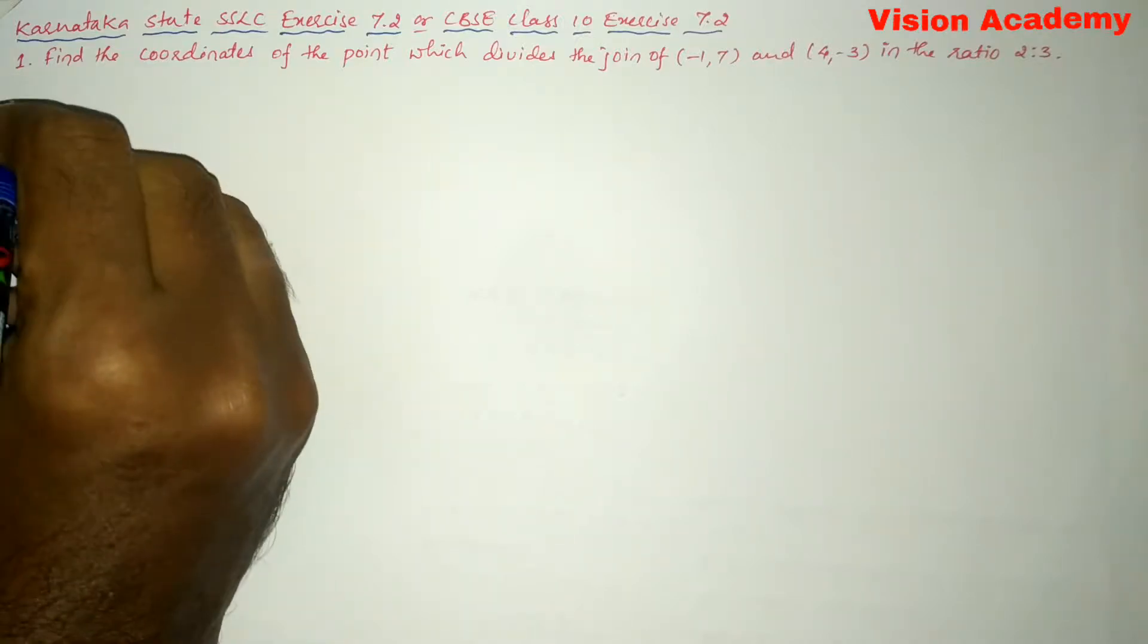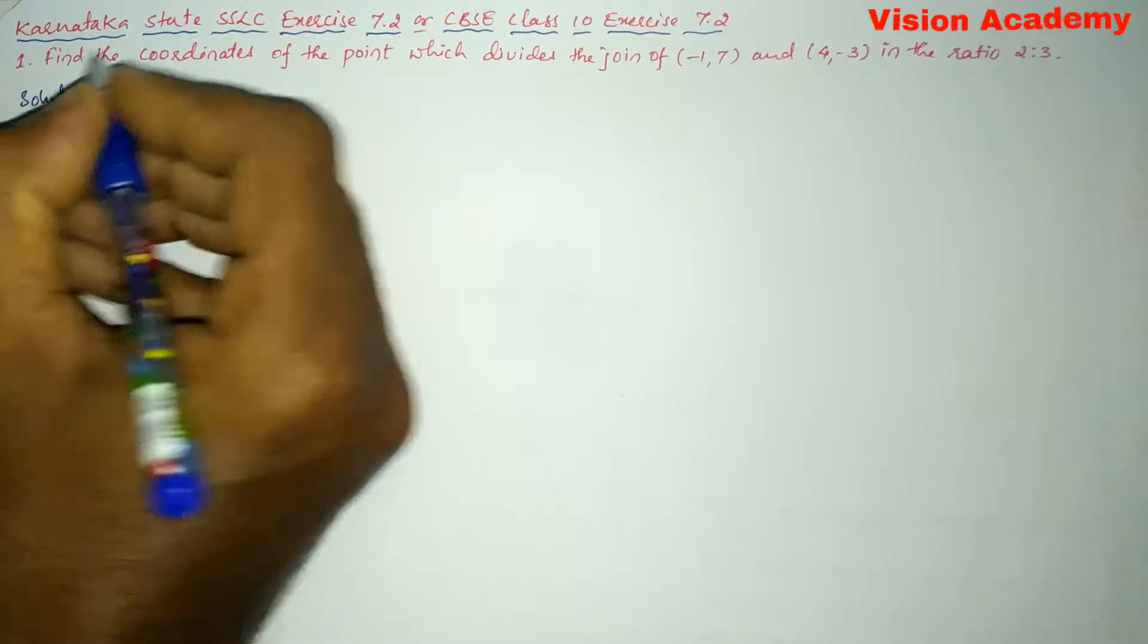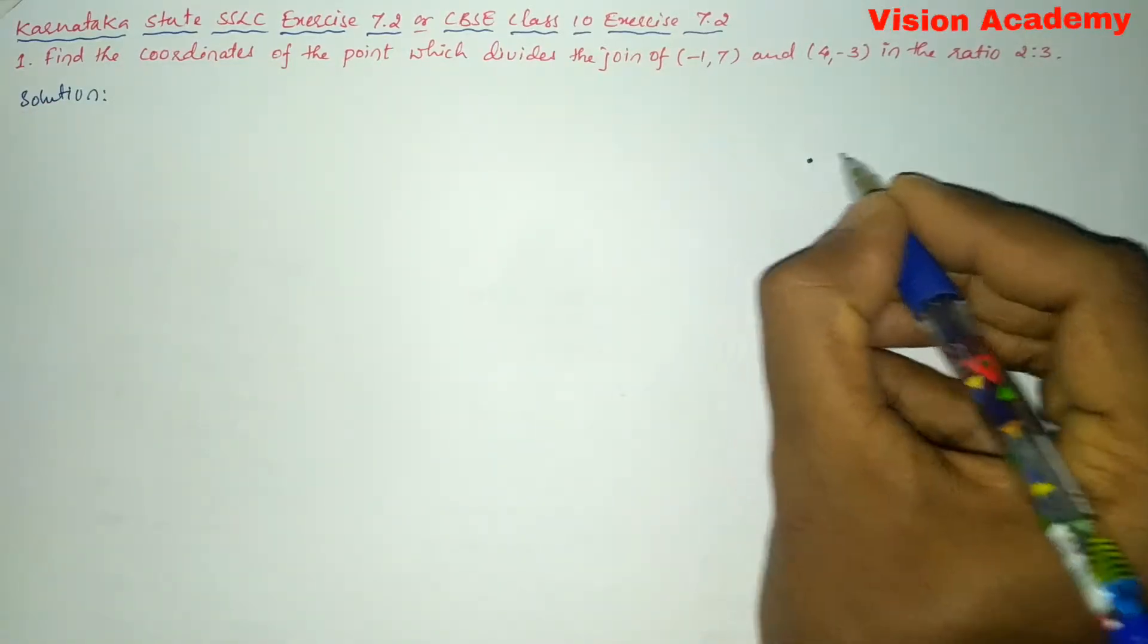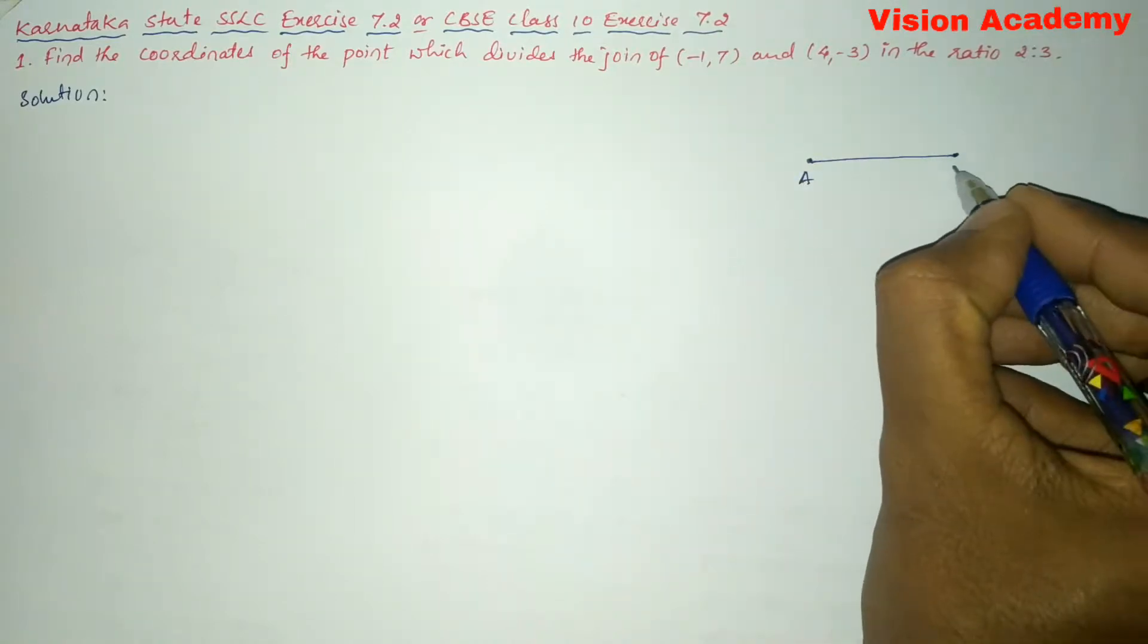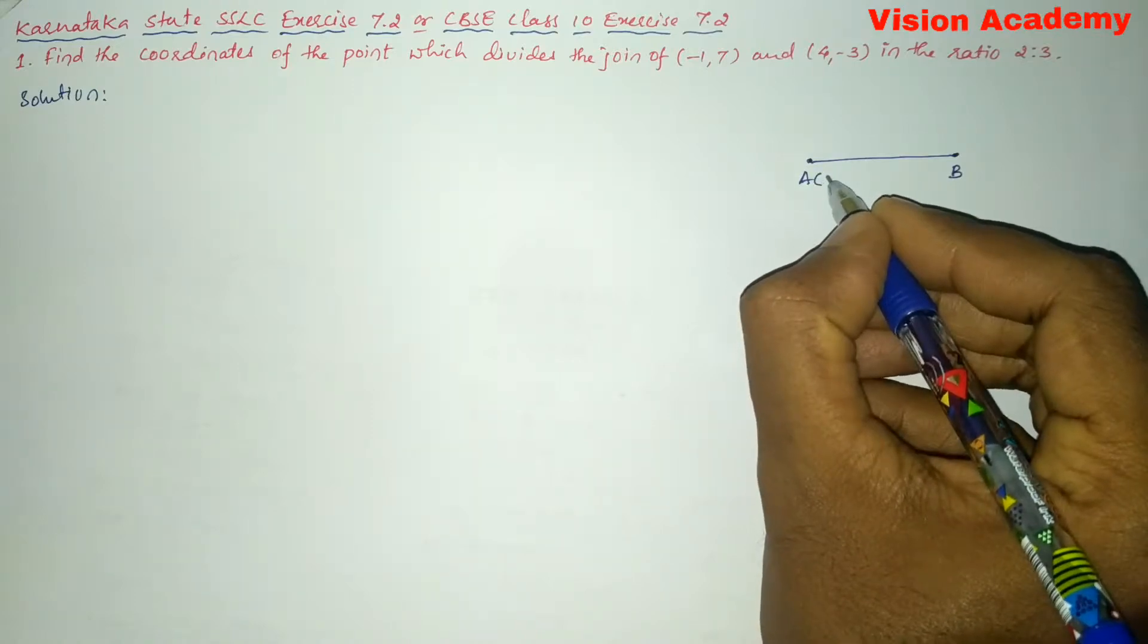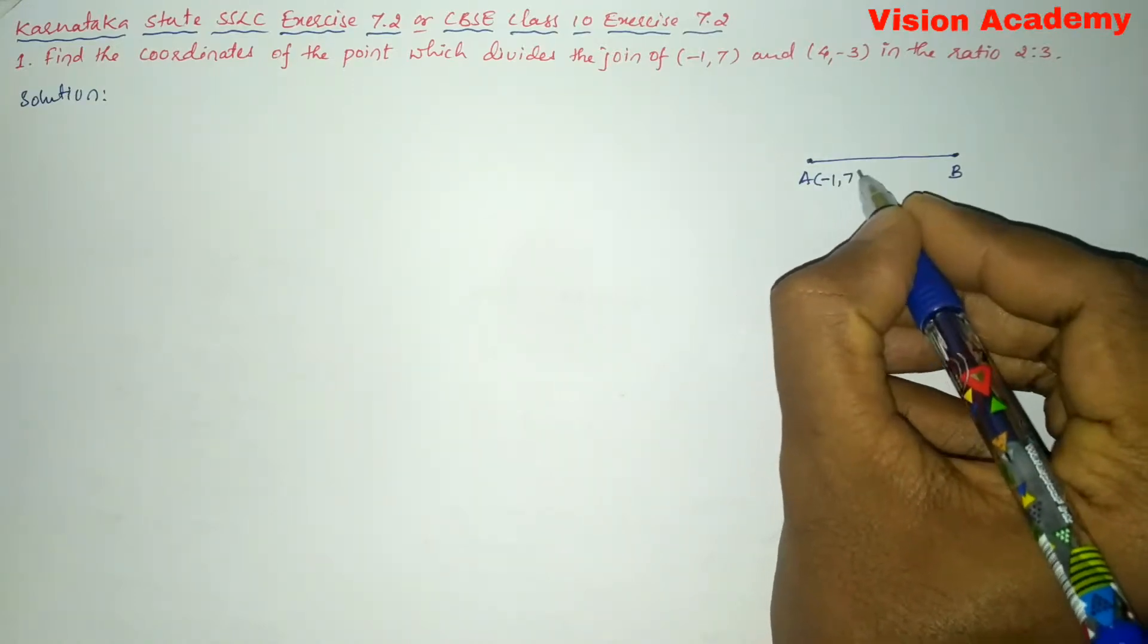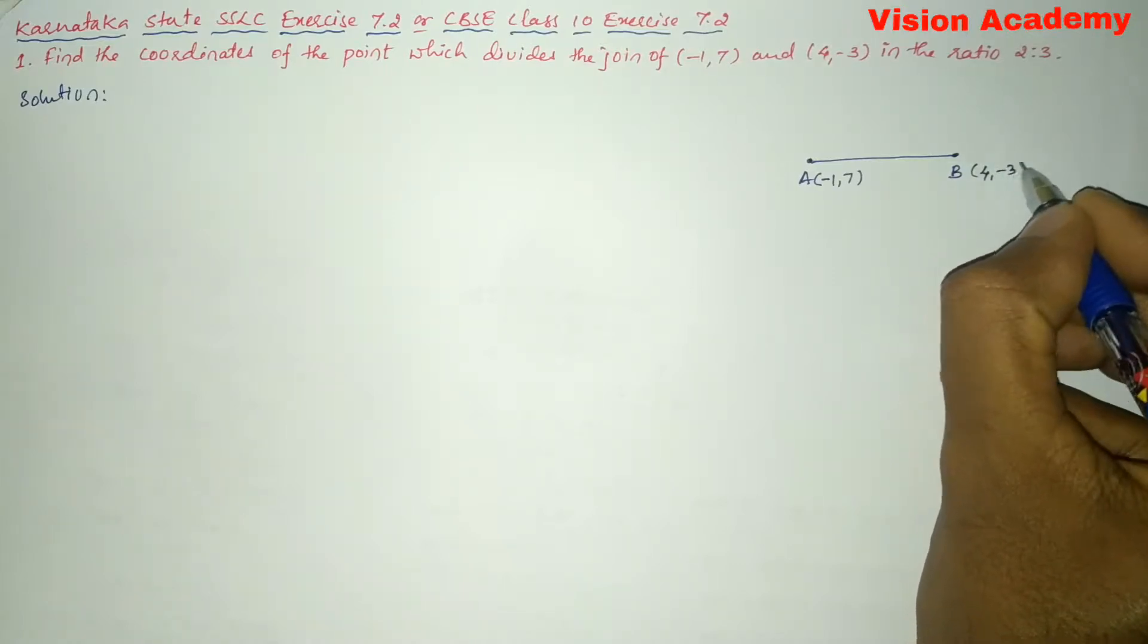Now, let us find the solution for the given problem. Here, let me write a line segment and name this as A and B, and the coordinates of A is (-1, 7) and let us take coordinates of B is (4, -3).